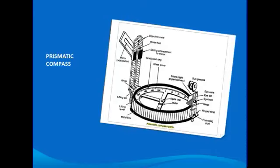The prism is protected from dust, moisture, etc. by a prism cap. Diametrically opposite to the prism is the objective vane, hinged to the box side and carrying the horse hair, with which an object in the field is bisected. The eye is applied at the eye hole below the sighting slit. The graduations on the ring can be observed directly by the eye after they are reflected from the diagonal of the prism.